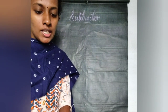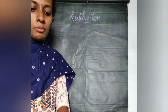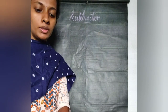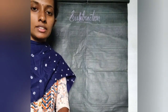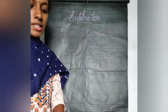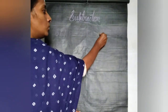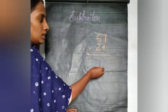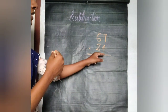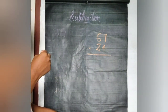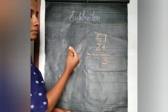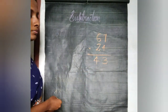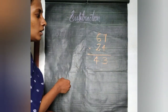One more example: 67 birds are sitting on a tree, and 24 birds fly away. So we have to do 67 minus 24. 7 minus 4 is equal to 3, and 6 minus 2 is equal to 4. So 67 minus 24 is equal to 43.